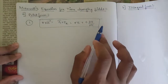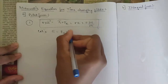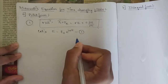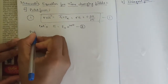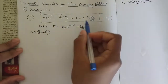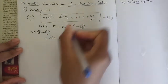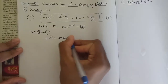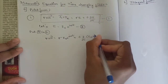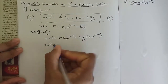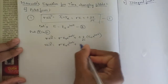From Ampere's law we obtained this equation. Now let E = E₀·e^(jωt) — call this equation 2, and the original point form equation 1. Substituting equation 2 into equation 1, in place of E we substitute E₀·e^(jωt): del cross H = σ·E₀·e^(jωt) + ε·∂/∂t(E₀·e^(jωt)).